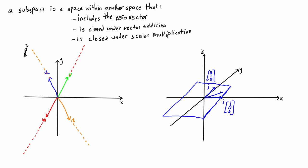If we add a third vector that's also in this plane — say vector z = (1,1,0) — it doesn't change the span, because the span of {i, j, z} is still just the XY plane. We could also consider another vector like negative j = (0,-1,0), which is parallel to j. Adding up all linear combinations of those gives us a line that matches up with the y-axis. That line is also a subspace of R3 — it includes the zero vector, is closed under vector addition, and is closed under scalar multiplication.